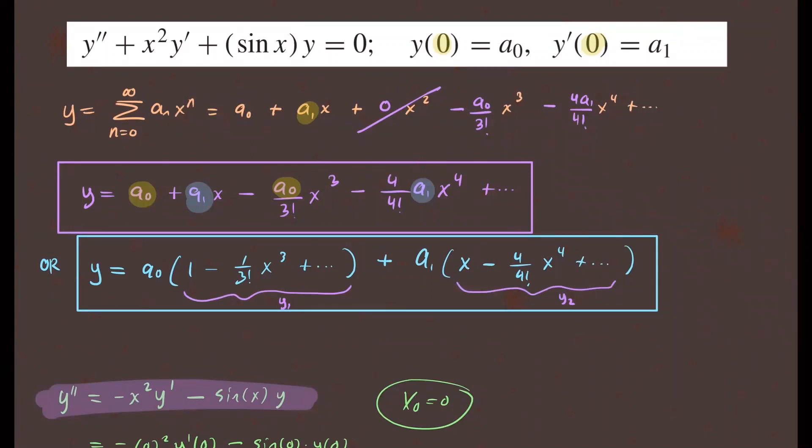The downside of this method is there's no recurrence formula, so you would have to use the other approach we covered previously for that. I hope this helped you understand this new method of finding the coefficients. I'll see you guys next time — take care.